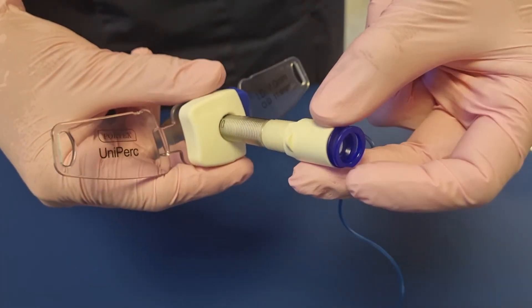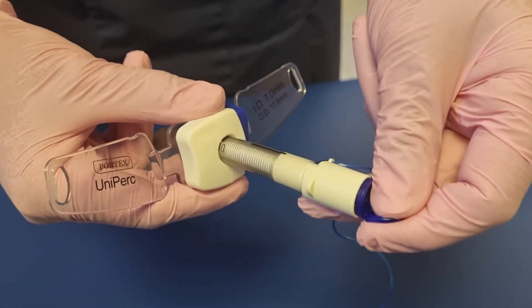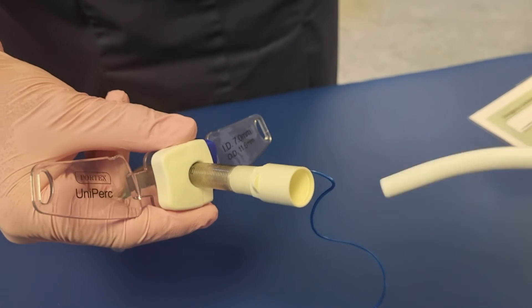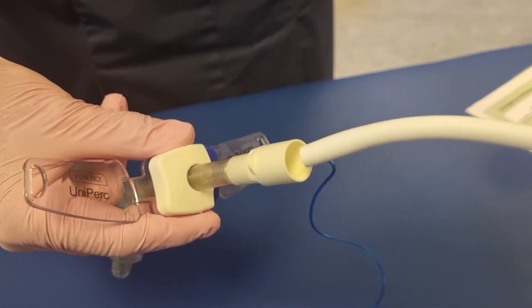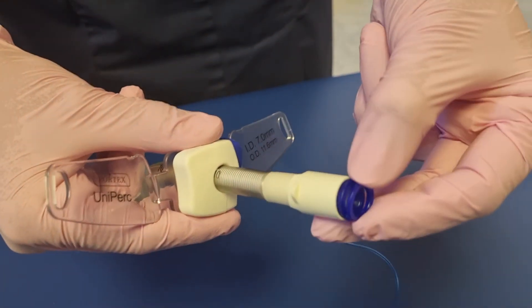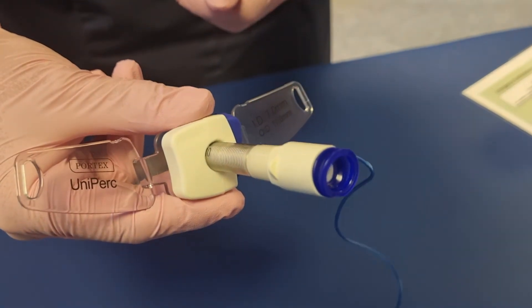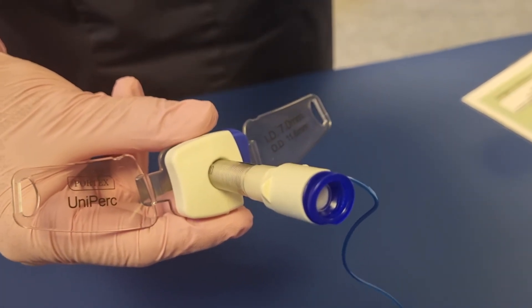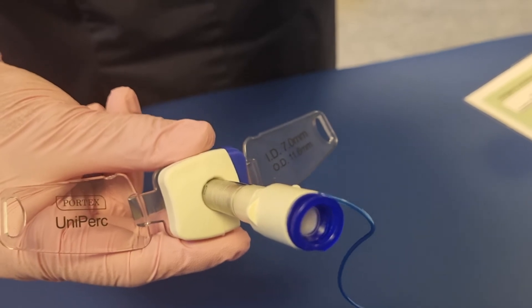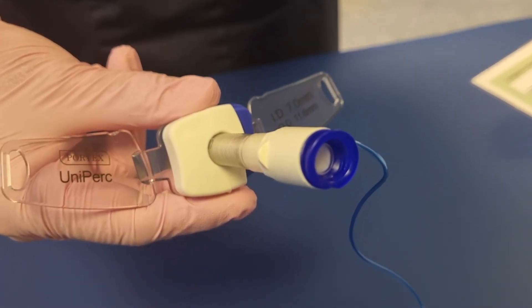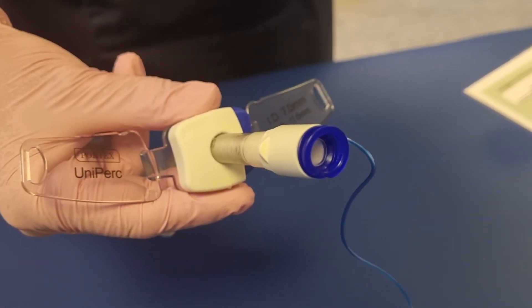Just to mention that this tracheostomy tube does also have an inner tube. So please ensure that when the patient comes back from theatre, this part of the tube is already inserted. We do have different sizes: 7, 8, and 9mm tubes, and all of them come with an inner tube.